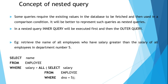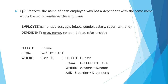The salary of each employee will be compared with all salaries from department 5. If this condition is satisfied, then the name of the employee will be retrieved. This is how a nested query is written. We will see another example.